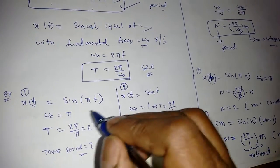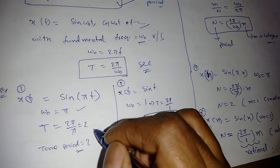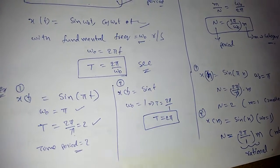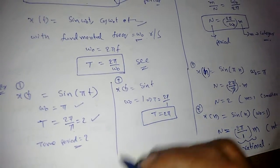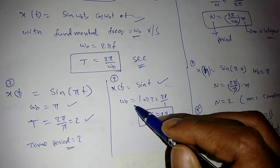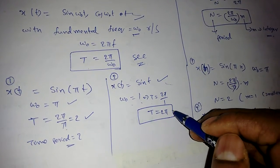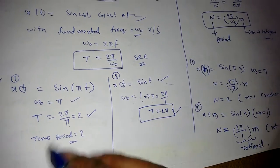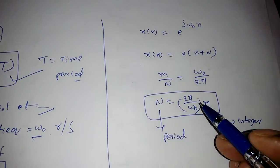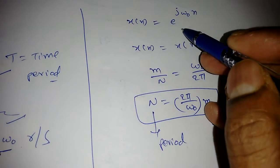For example, sin(πt) has ω₀ = π, so T = 2π/π = 2 seconds. For sin(t), ω₀ = 1 and T = 2π/1 = 2π seconds. Now for discrete-time signals, the expression is the same, and signals like e^(jω₀n) have a different periodicity condition.